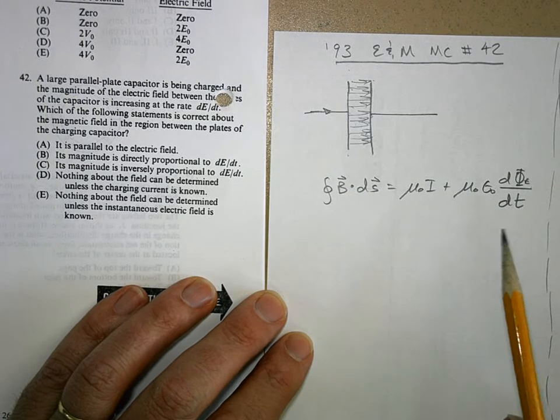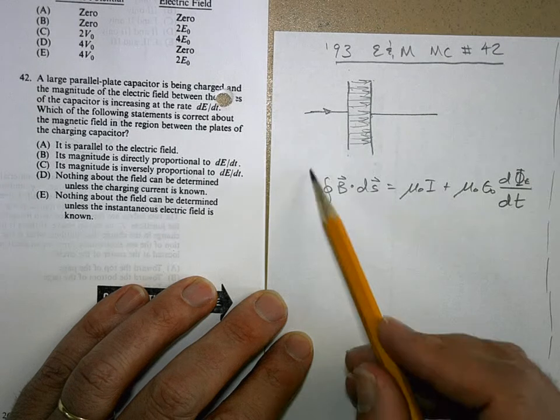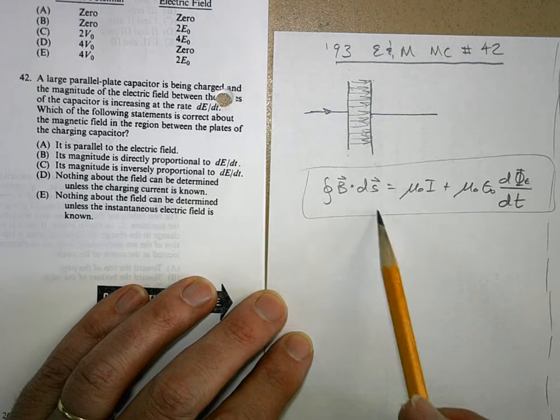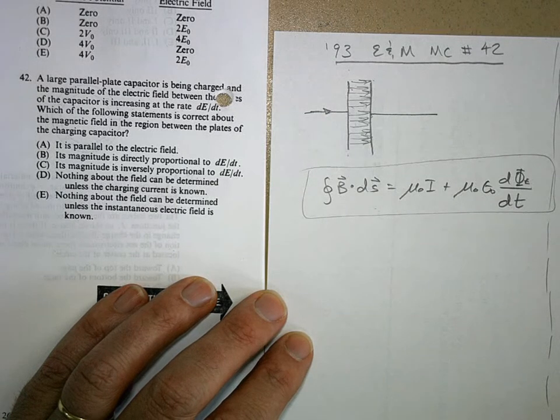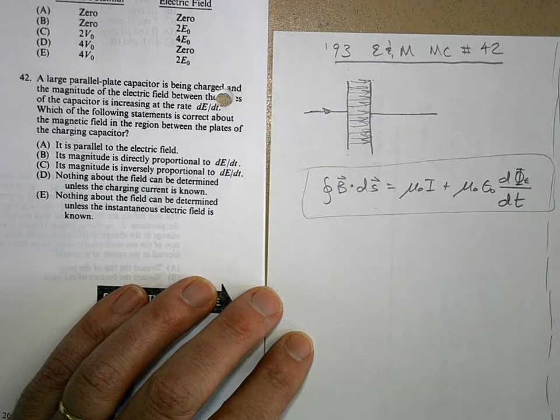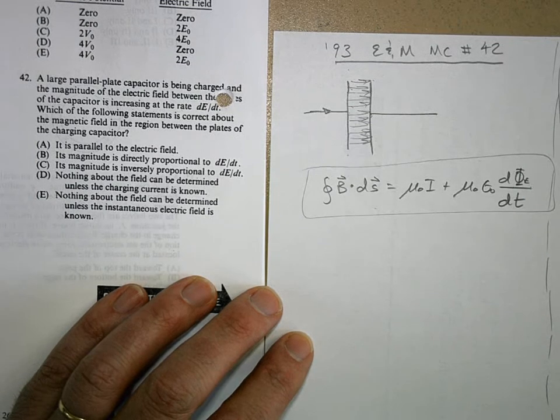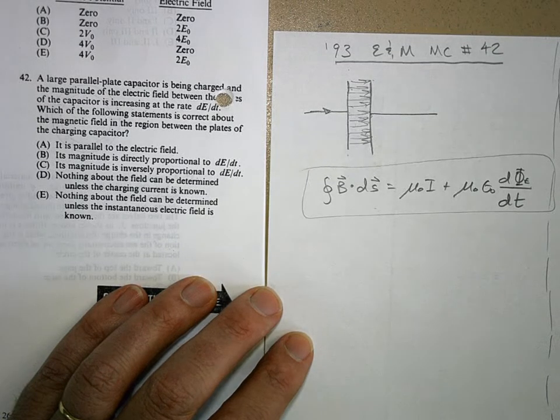Now this is the big idea. Ampere-Maxwell's law, you need to memorize that. That's one of all of Maxwell's equations for E&M. You should memorize them and really kind of understand what they mean. The last thing that I want you looking at before you take the E&M test are Maxwell's equations, to memorize them and make sure you know what they mean.